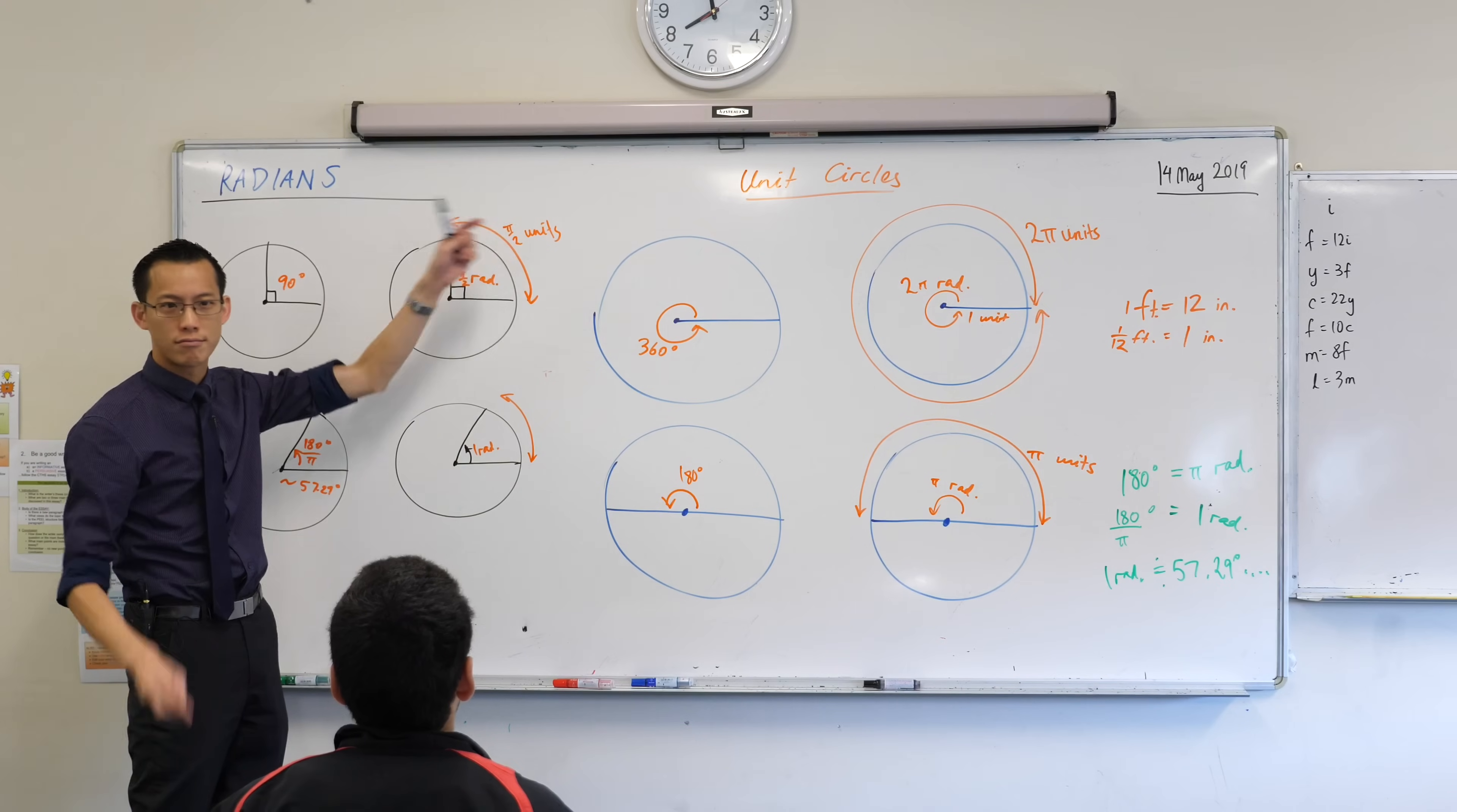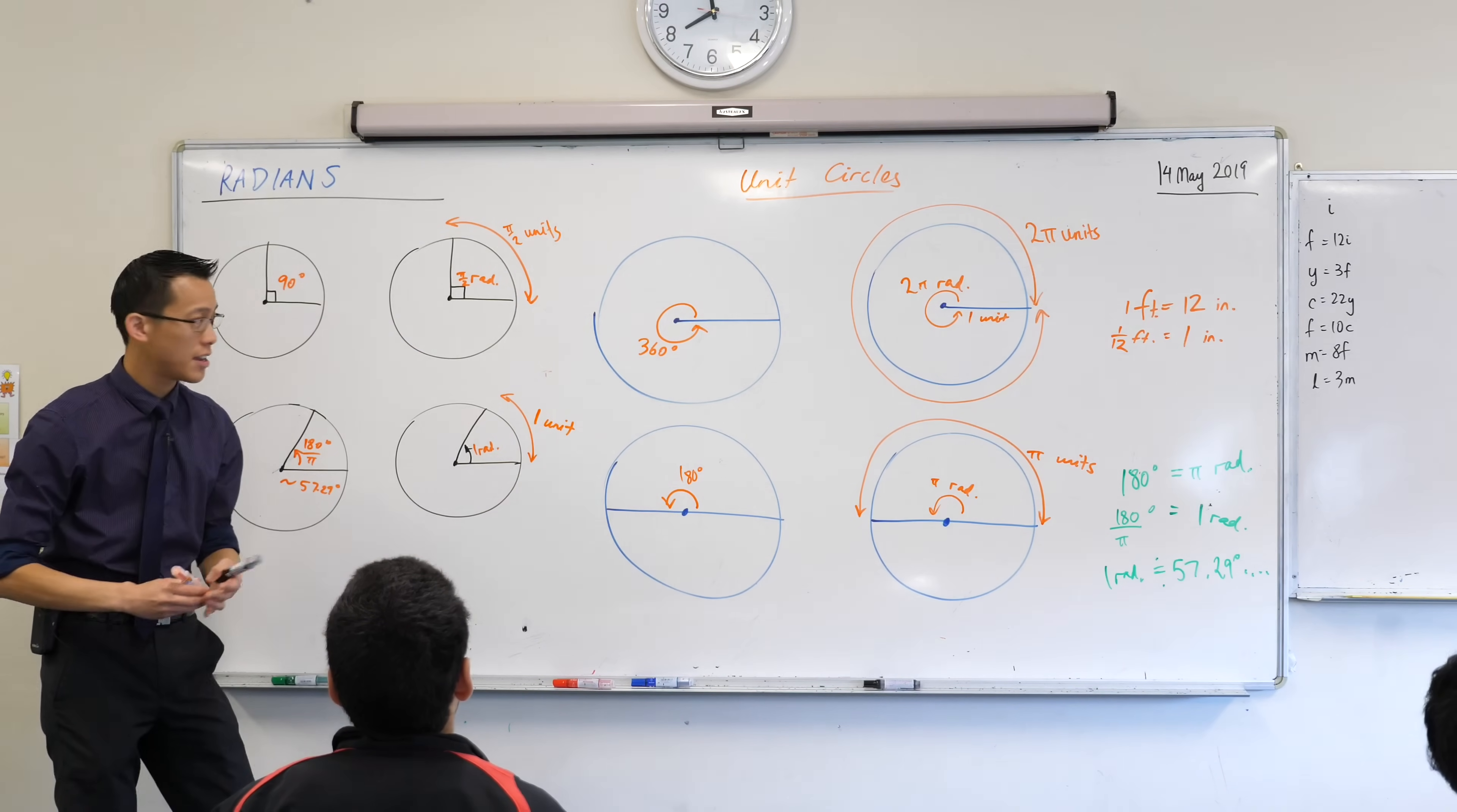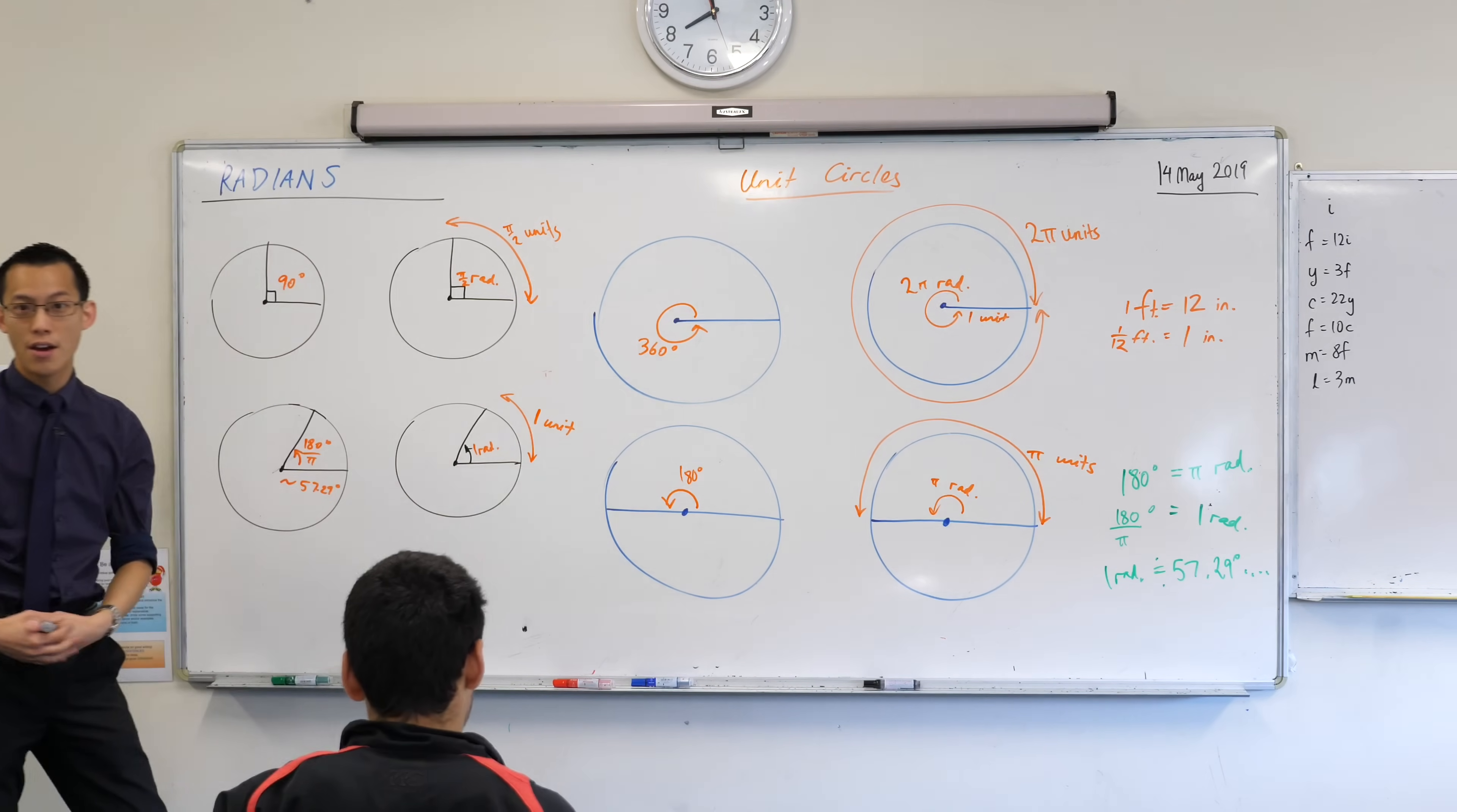So it's just one of those. That's how far I've gone around, right? Now remember, we started off by saying all the way, the entire circumference is about 6.3. Does this not look about one-sixth of that? That's why it's exactly one unit.